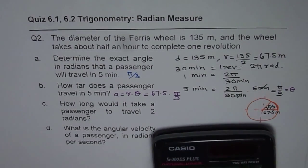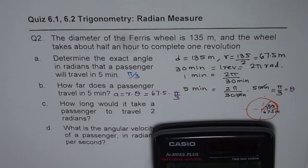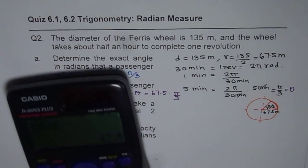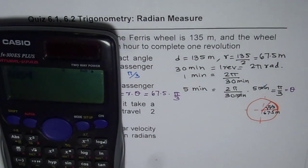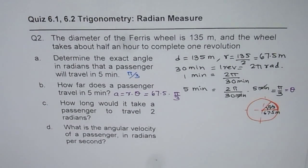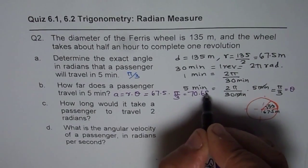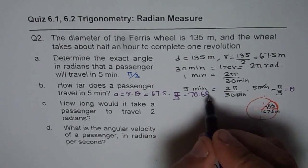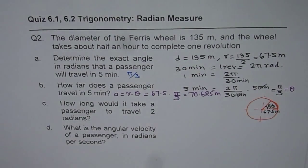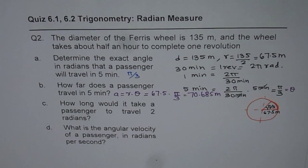We have 67.5 as the radius times π divided by 3. That gives us, in decimals, 70.685, which is 70.68 or 5 meters. So that is the distance traveled by the passengers in five minutes.